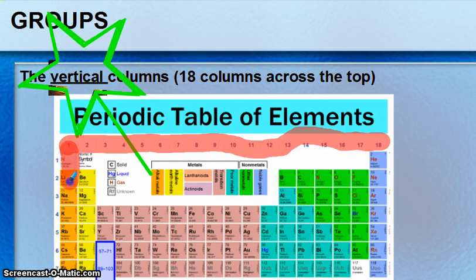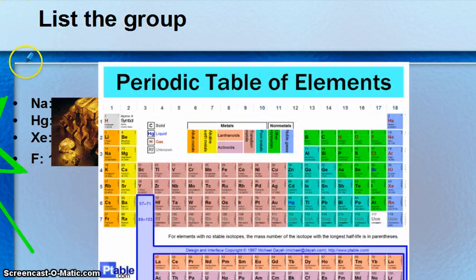And everything within a group has very similar properties. Group one all act very similar. That's why they call them families. All the way over to group 18, the noble gases all behave very similarly. You can tell a lot about an element based on its group.